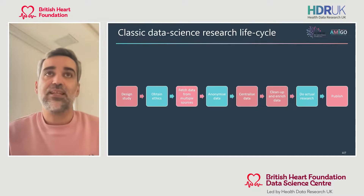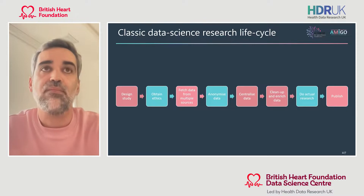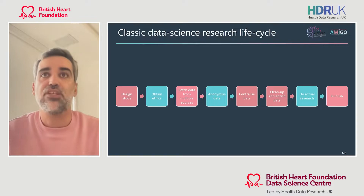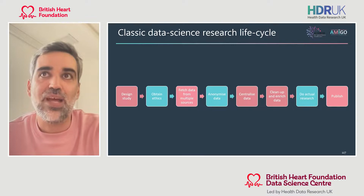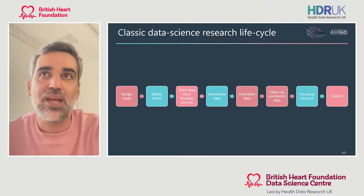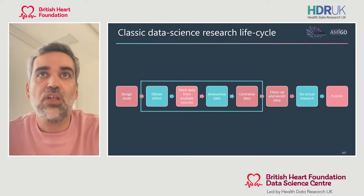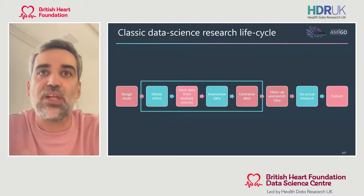In classic data science, you first design the study, obtain ethics, fetch data from multiple sources, anonymize the data, put it into a centralized location, clean it up, and then enrich it before doing research. All of these initial steps — obtaining ethics, fetching data, anonymizing, centralizing — are incredibly complicated, primarily when you want to make use of clinical data. The burden of proof in terms of data anonymization and data privacy, the need for consent, can make that process incredibly cumbersome, which means we're often limited to research-grade datasets for which patients have given advanced consent.